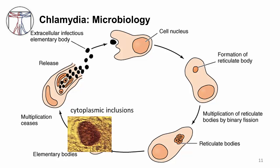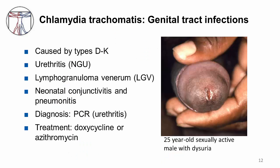The chlamydia variety that causes genital tract infections is Chlamydia trachomatis types D to K. The different manifestations of genital tract infections include urethritis predominantly, but also LGV or lymphogranuloma venereum, neonatal conjunctivitis, and pneumonitis. Diagnose genital tract infections via PCR and treat with doxycycline or azithromycin.